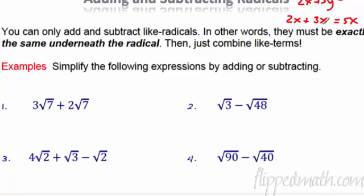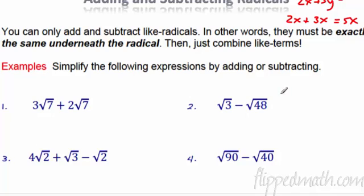It's the same thing with radicals. The only added hiccup here is that they might give you something like radical 48, which you must simplify first. But when you simplify it, it might end up being a like radical — meaning it's also a radical 3 in this case.